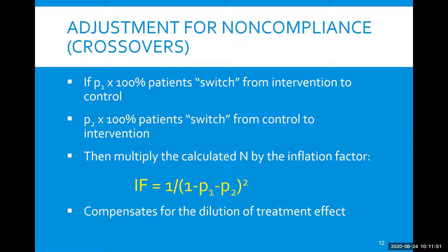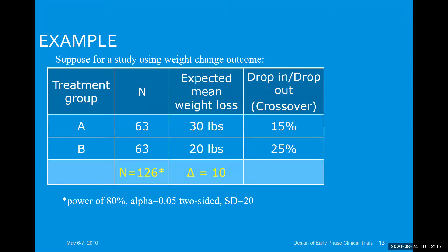We need to think about how likely crossover is to happen. Once we have those expected proportions, we can calculate the inflation factor, which is one over — in the denominator — one minus those two proportions, squared. It ends up being quite a large inflation, but this compensates for the dilution of the treatment effect that happens when you have treatment noncompliance.